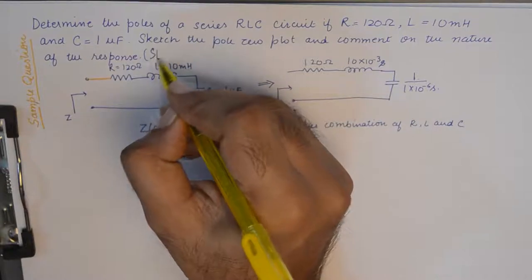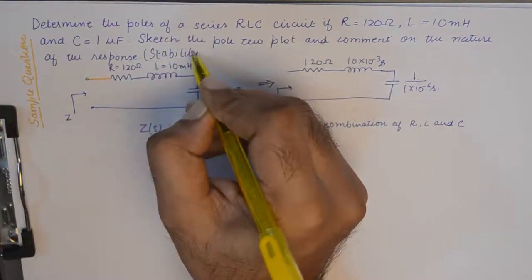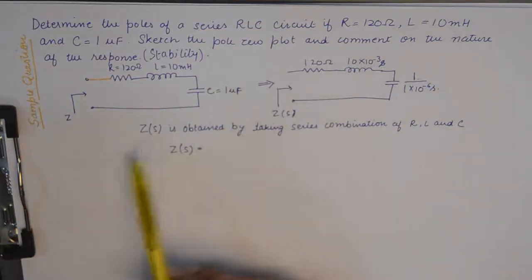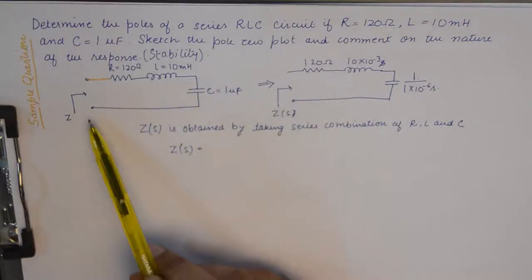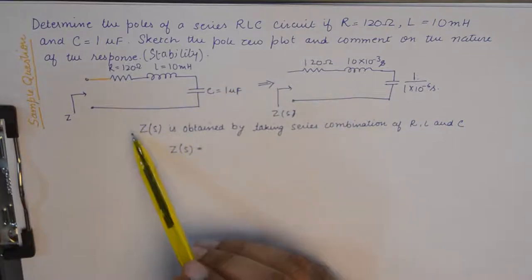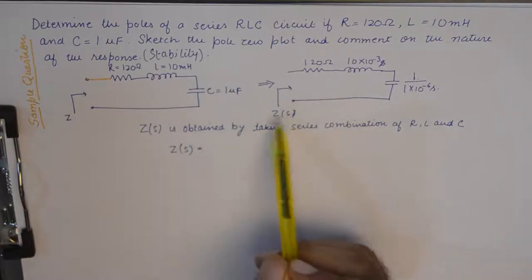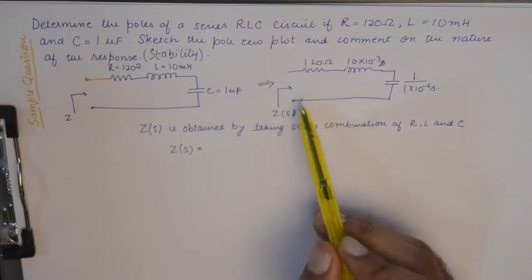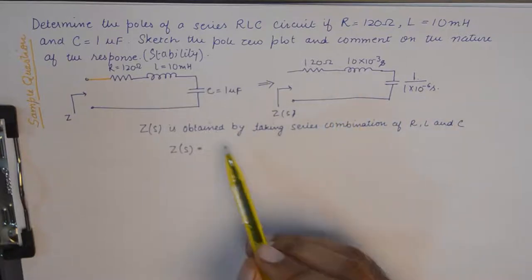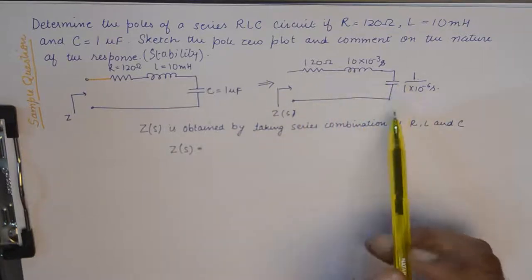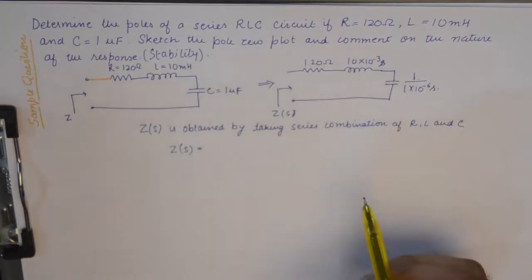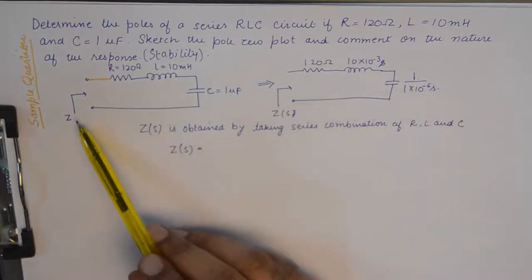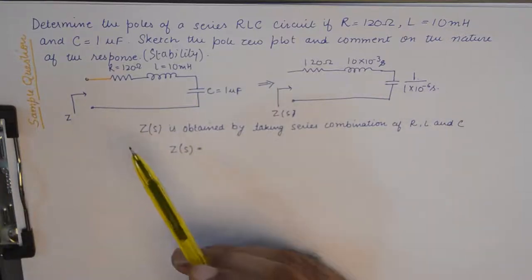For a series RLC circuit, what we'll do is we'll find out the impedance, the driving point impedance for this circuit. The reason for that is because it is easier to find the driving point impedance function just by adding the three components in series.